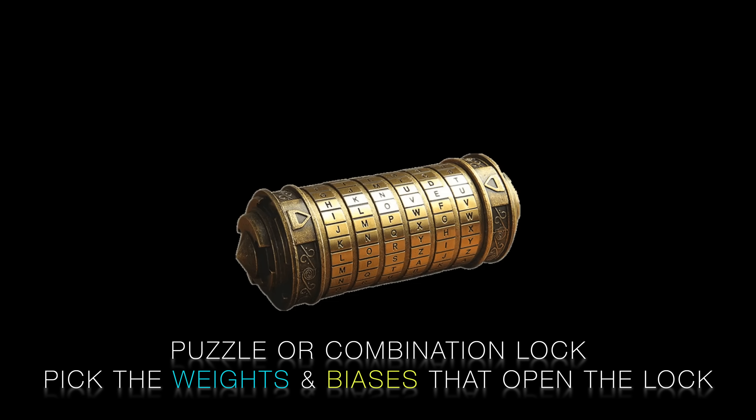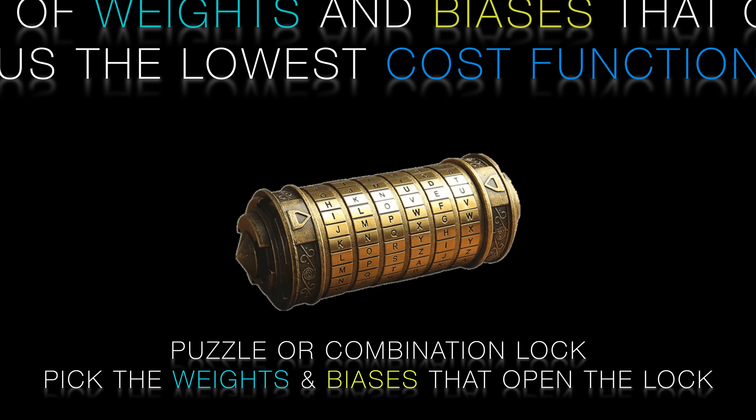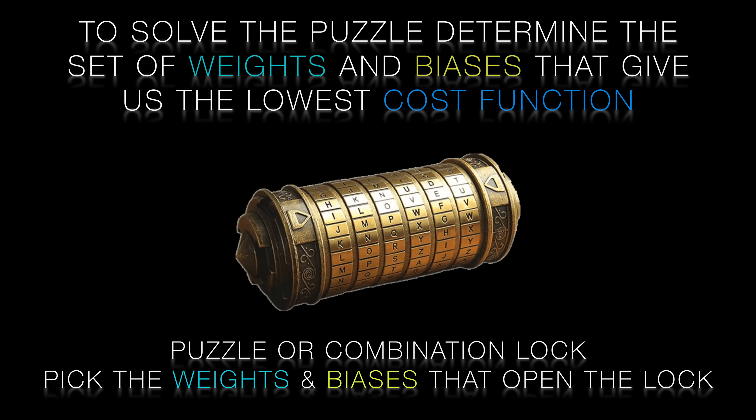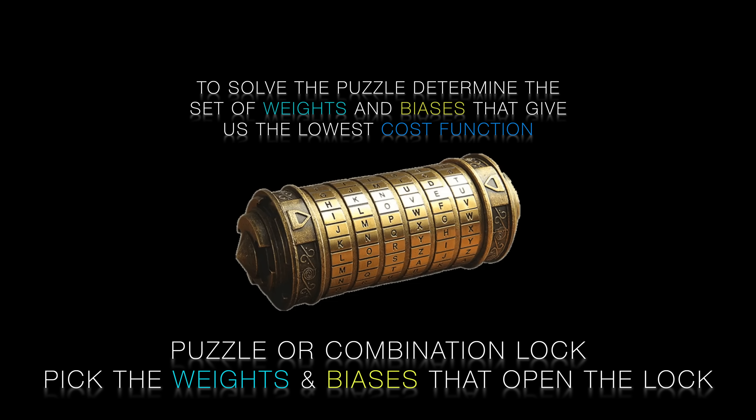Think of this like a giant mathematical combination lock. We have a cost function that measures the square of the difference between known outputs and what our network calculates. To solve the combination lock puzzle, we come up with a set of weights and biases — the numbers on our combination lock — that get the cost function as low as possible. Open the lock.